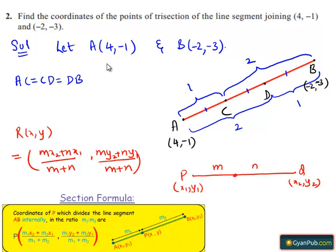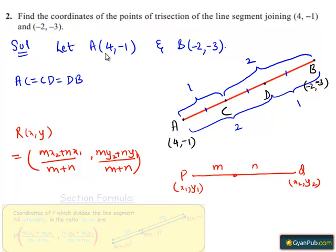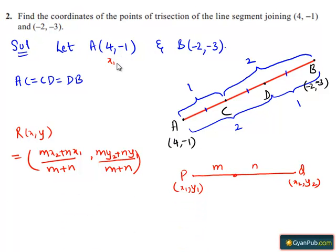Here, we can represent point A as (x1, y1) and point B as (x2, y2). Let us take point C, which divides AB in the ratio 1:2 internally, so M = 1 and N = 2.